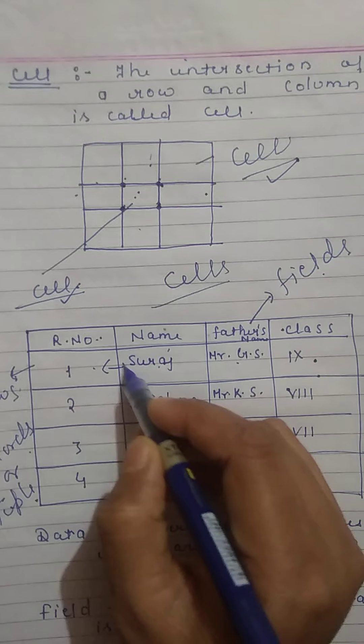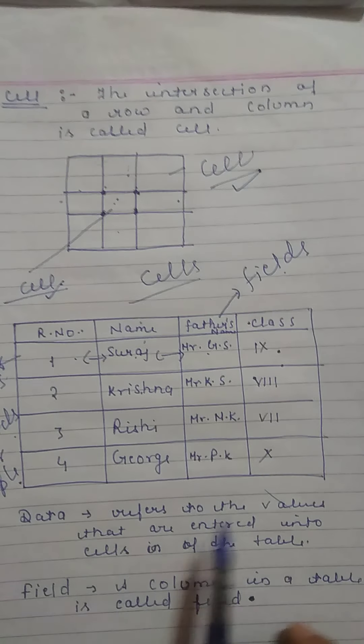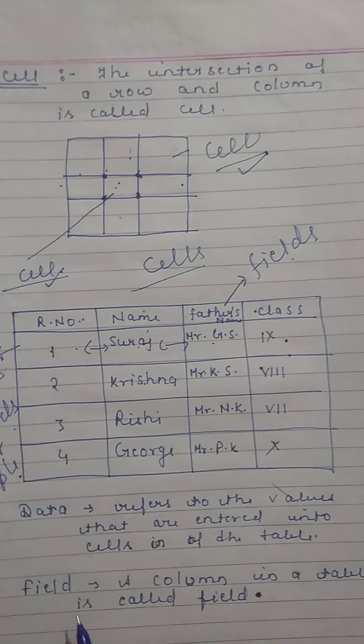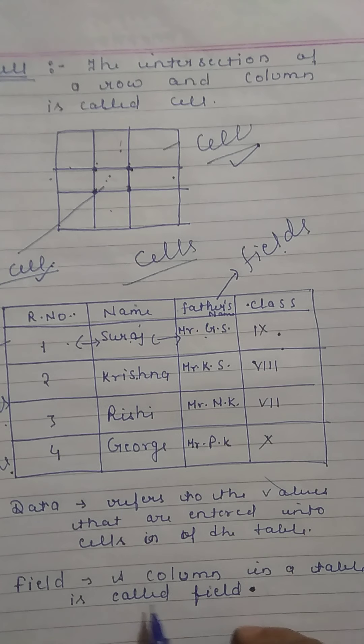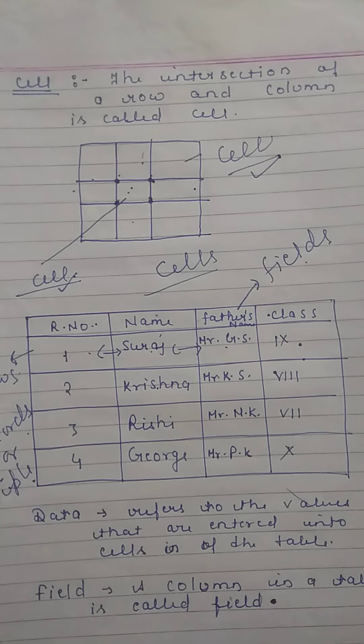And all these are related to each other. Generally, data refers to the values that are entered into cells of the table. A column in table is called field. And field contains similar data or same data.